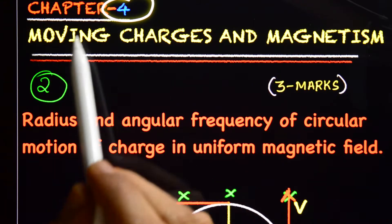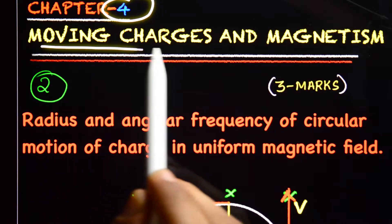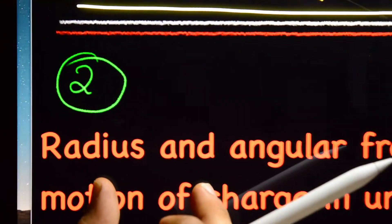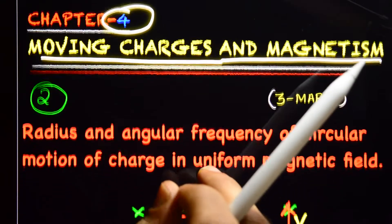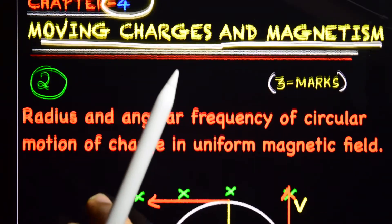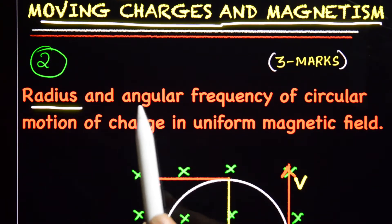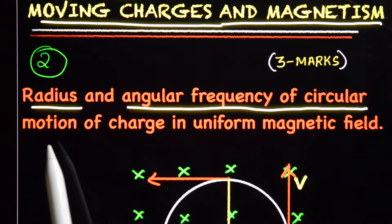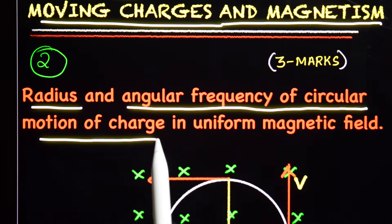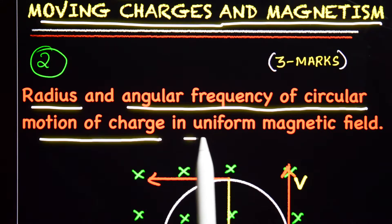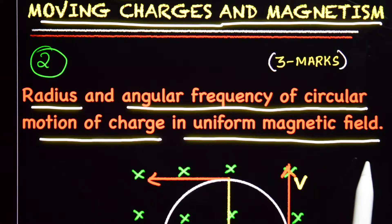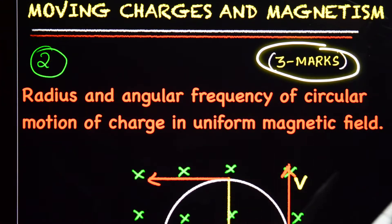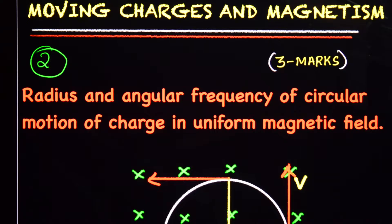Chapter 4: Moving Charges and Magnetism. This is our second topic: Radius and Angular Frequency of Circular Motion of Charge in Uniform Magnetic Field. This topic carries 3 marks.